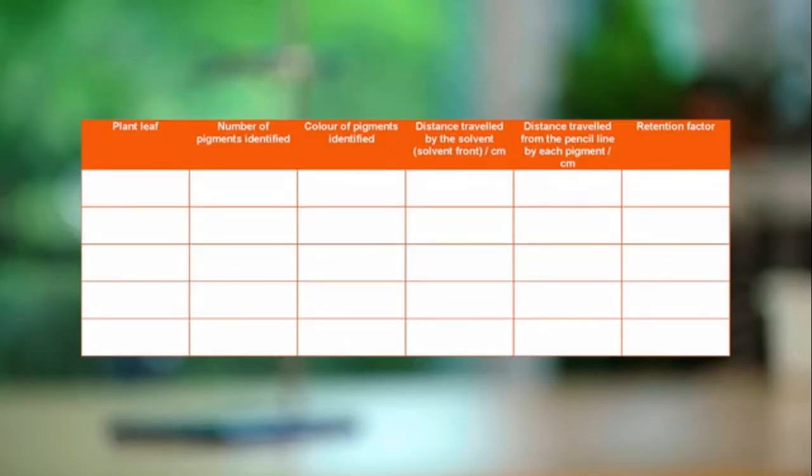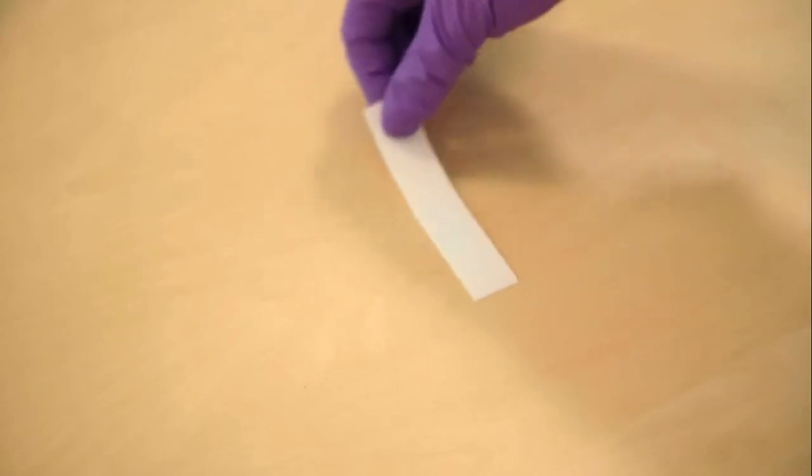A table like this one should be constructed for the results. First, a strip of chromatography paper is placed on a clean and dry flat surface.